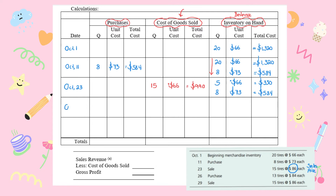On October 26th, purchase: 13 units at $84 each. Under purchases, 13 × $84 = $1,092. The balance now shows 5 units at $66 = $330, 8 units at $73 = $584, and 13 units at $84 = $1,092.